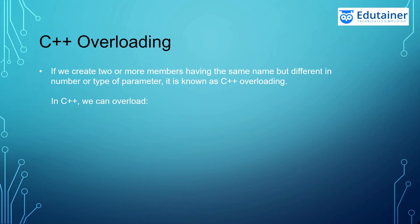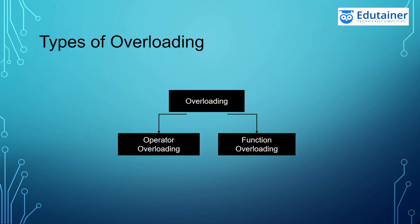In C++, we can overload methods and constructors. There are two types of overloading: one is operator overloading and one is function overloading. In operator overloading, we will be overloading an operator, whereas in function overloading, we will be overloading a function.